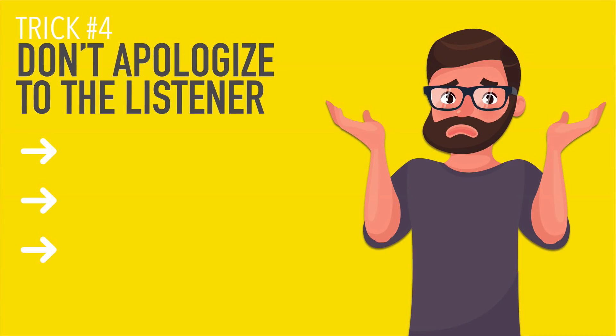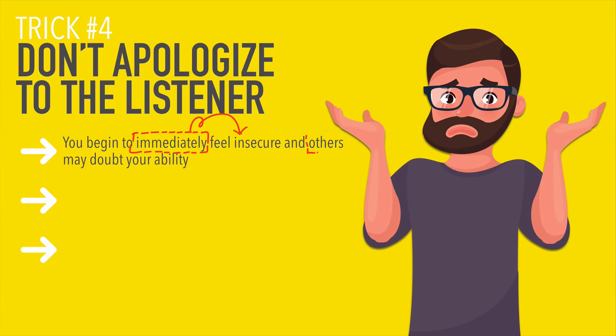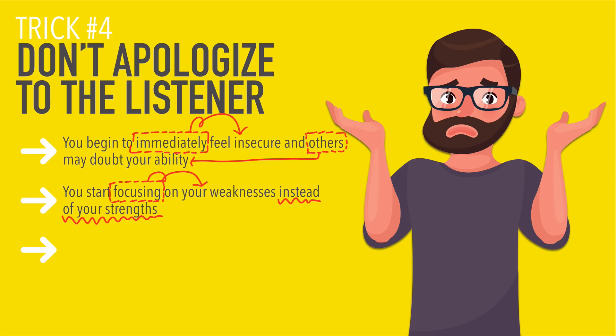Number four: don't apologize. I really want to emphasize this — don't apologize to the listener. Many students do that, but when you do, you immediately feel insecure and others may doubt your ability. You start a conversation with the other person already doubting your ability to continue. Also, when you apologize, you start focusing on your weaknesses instead of your strengths. Remember that you are doing good — don't focus on your weaknesses.